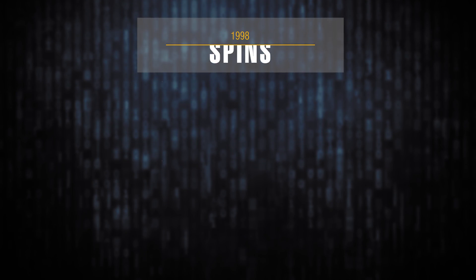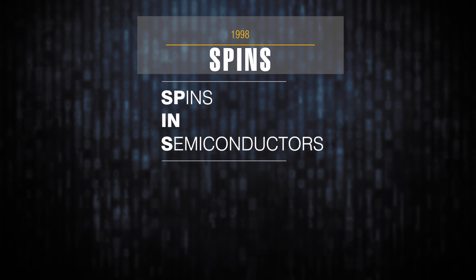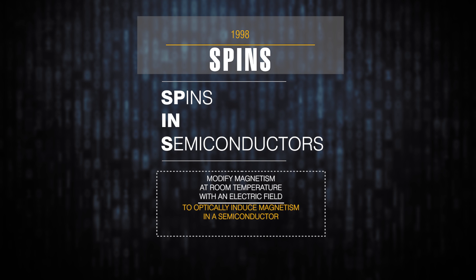Those two discoveries gave me the idea that there could be a new DARPA program called Spins. The idea was, number one, the ability to modify magnetism at room temperature just with an electric field. And the second thing was to exploit the idea that you could optically induce magnetism in a semiconductor.